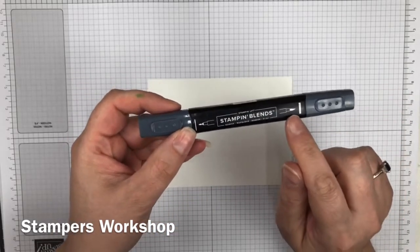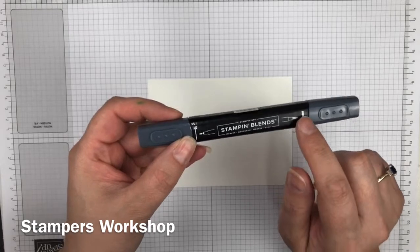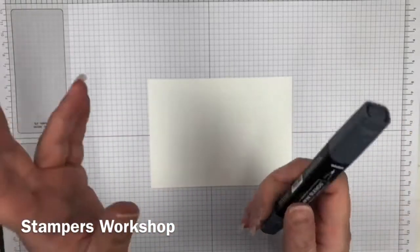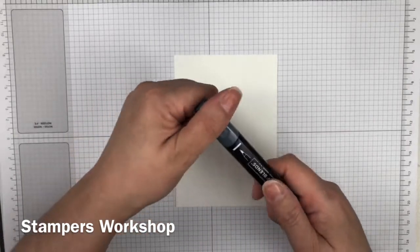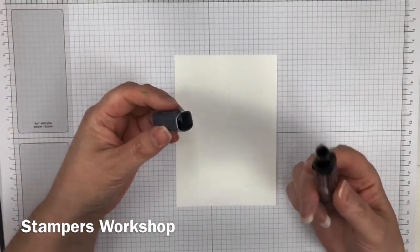You have to be a little bit gentle with this because you don't want to ruin your nib. All you need to do is take off the lid and keep it in your hand.